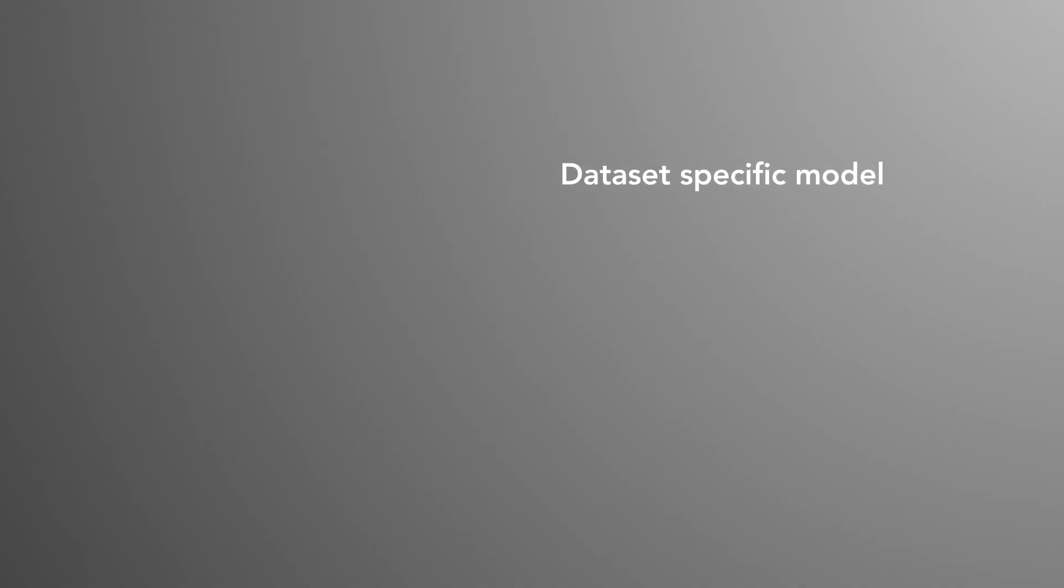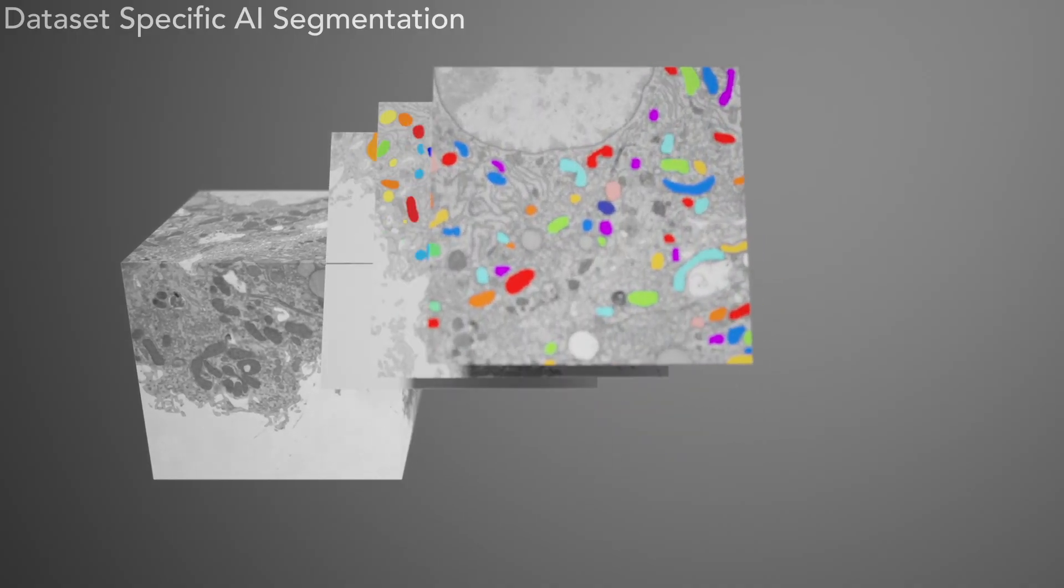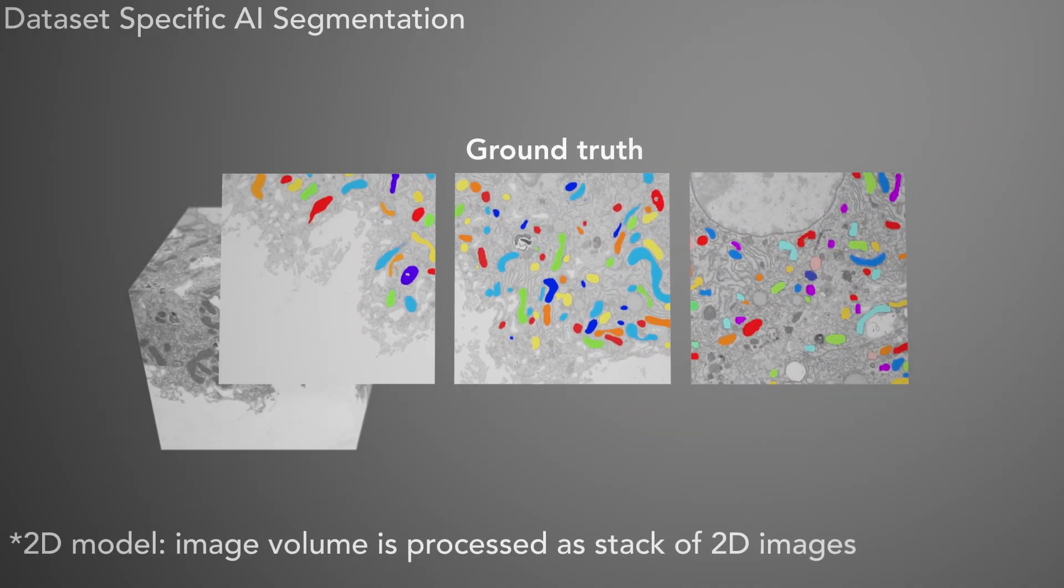In a dataset-specific model, selected or random 2D images from a volume EM dataset are manually segmented and used to train a model.